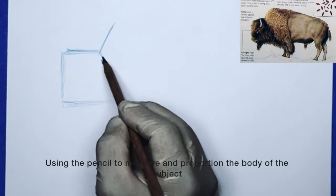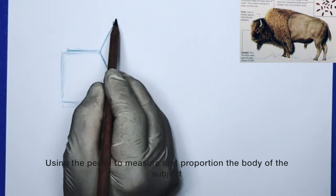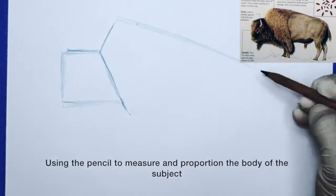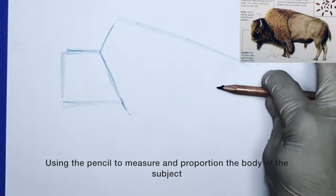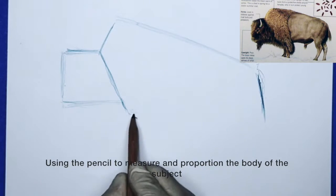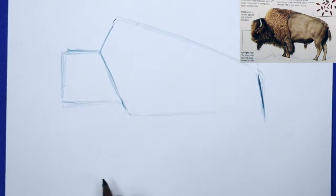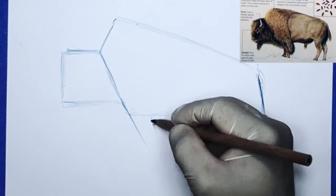We continue using the head of the American Bison that we sketched initially to proportion the rest of the body. In this case, it's about one, two, three heads in that direction. And I'm going to follow the shape that we are seeing. And we pretty much have the body sketch.